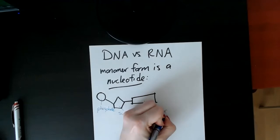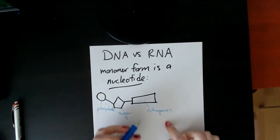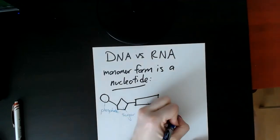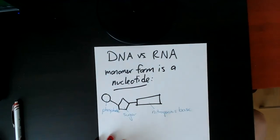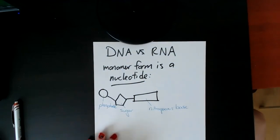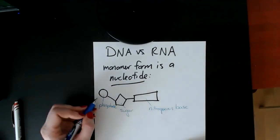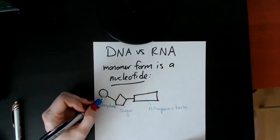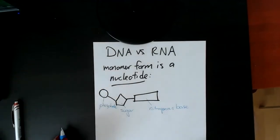When we talk about why plants or humans need nitrogen — this is it. This is one of the big reasons: if you want to make more DNA, you need nitrogen to make more of these bases. There are four different possibilities for the bases. The phosphate is connected to the sugar — that's all you need to know. Sugar, phosphate, nitrogenous base.